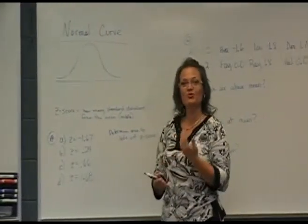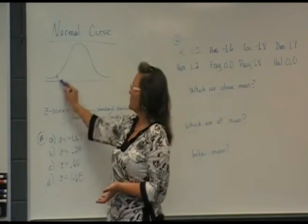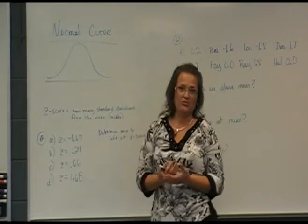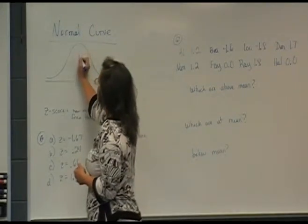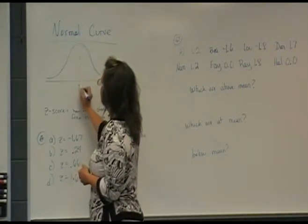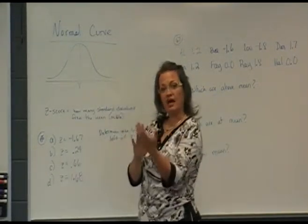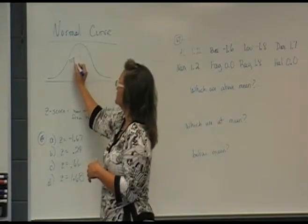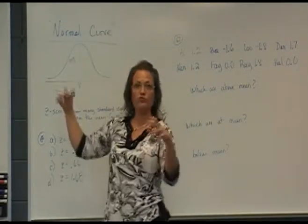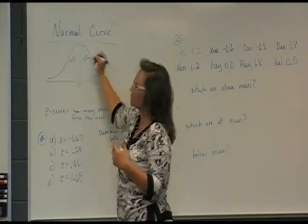Moving on to the last topic: the normal curve. In a normal curve, we have a bell shape — kind of an upside-down bell shape. There is an imaginary line right down the center for the mean, and it halves the curve — half and half. Fifty percent of the data falls on each side, if something is said to fall under a normal curve, that means half and half, right down the middle from the mean.